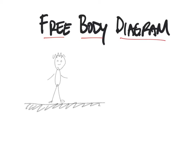We might try to imagine what are the forces that are acting on this person as he just stands there. To do that, what we might do is draw a dot, and we're going to say that this dot represents the object in question — in this case, the person. It doesn't matter what the object is; we just represent the object in question as a dot.